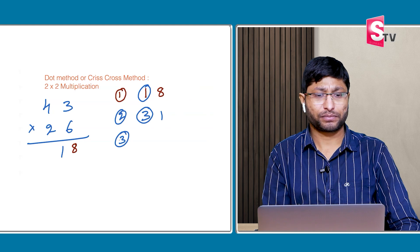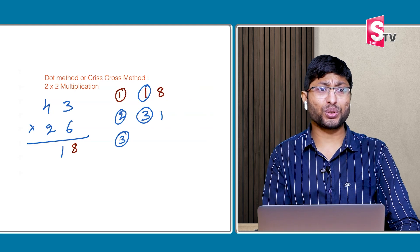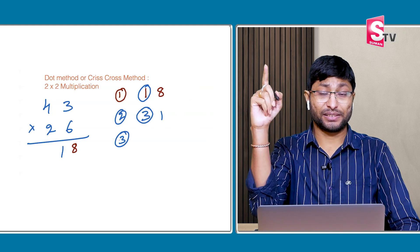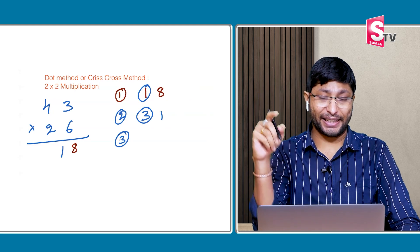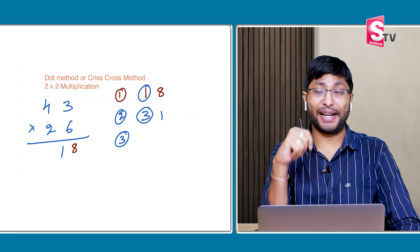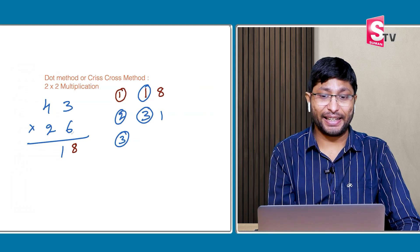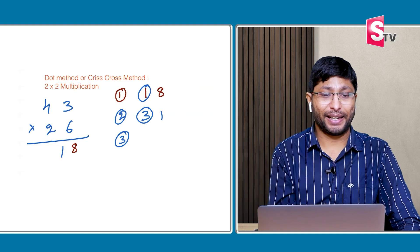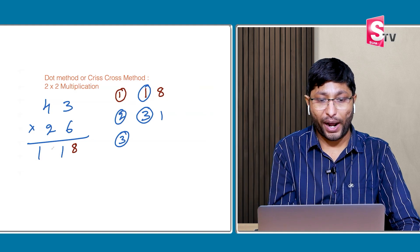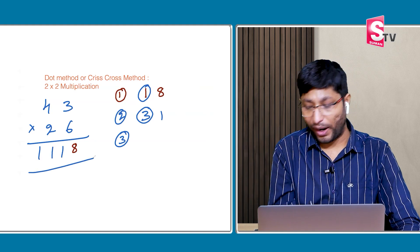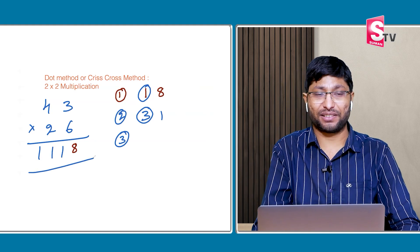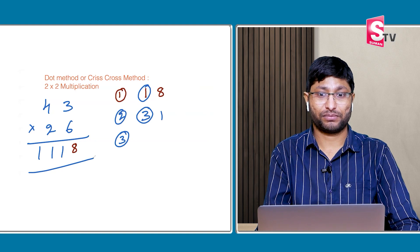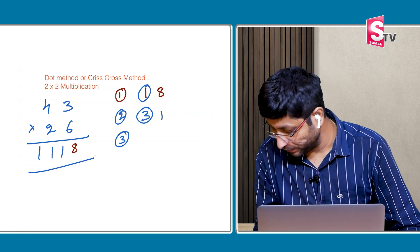Step 3: 4 × 2 = 8. Plus 3 carry = 11. So the answer is 1118. Very simple.